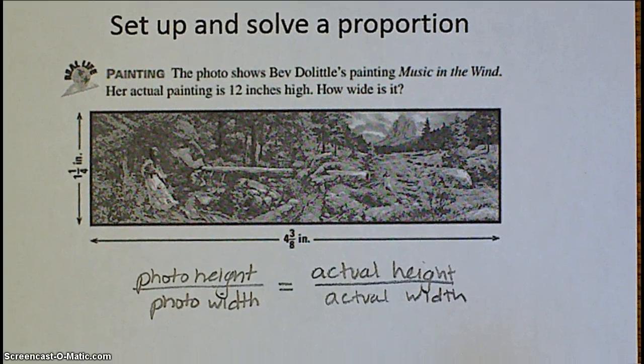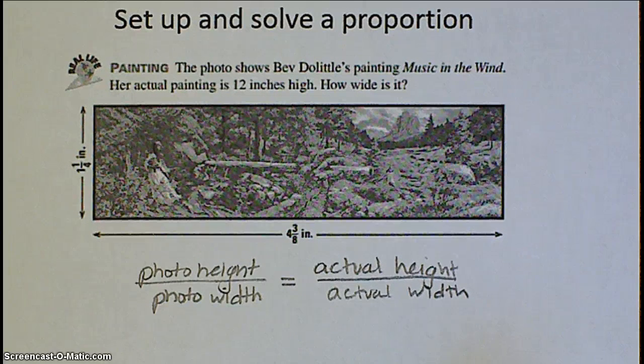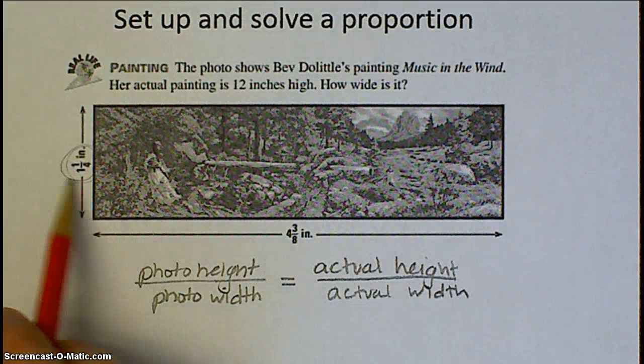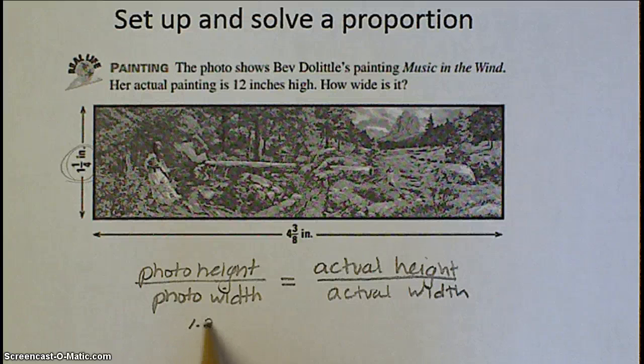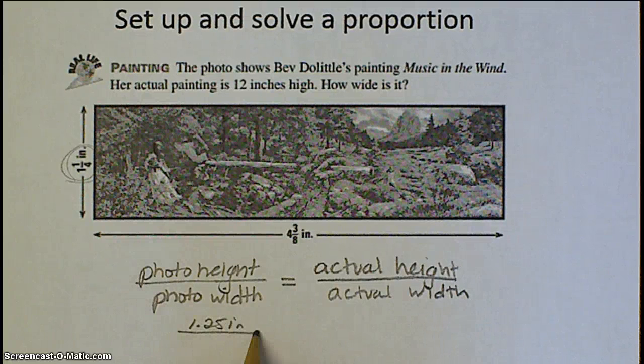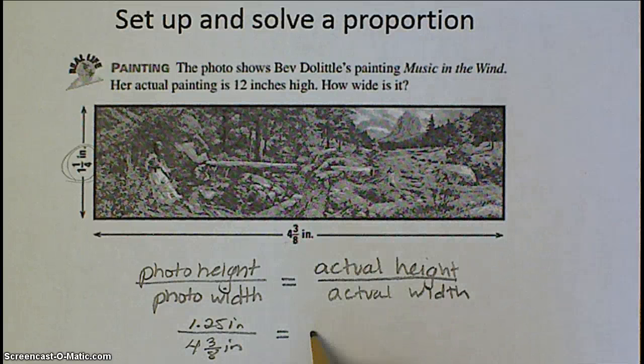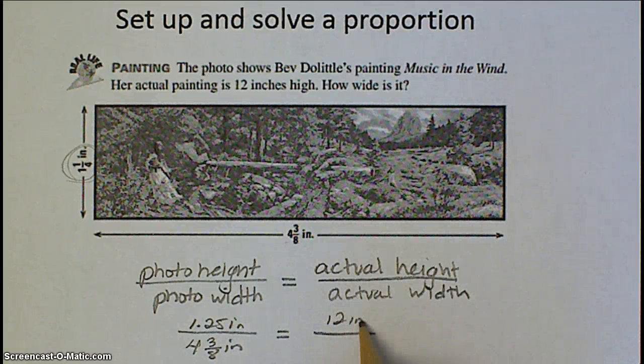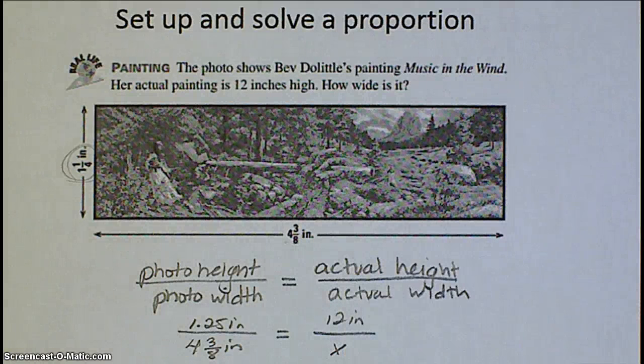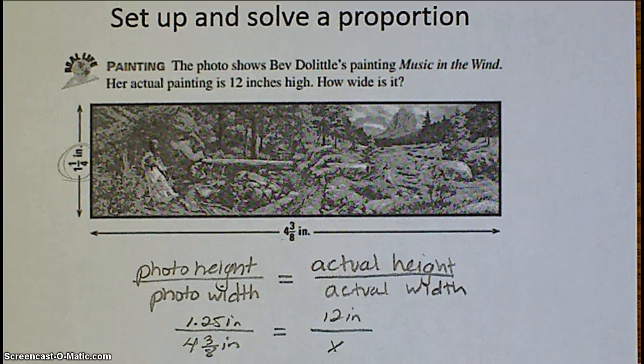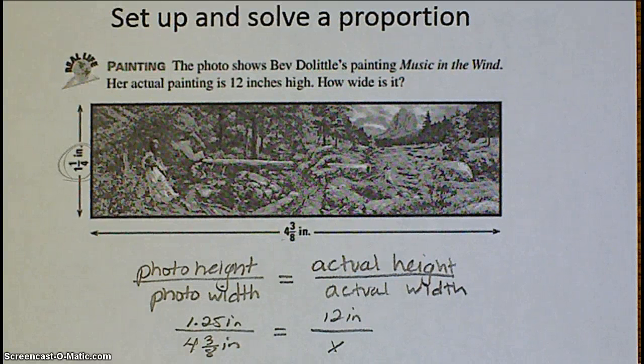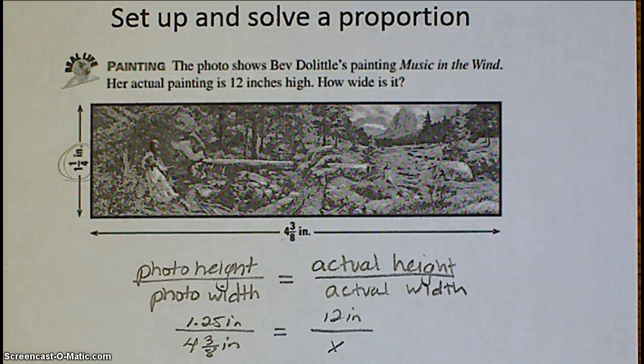And now you can just plug in the numbers that are provided to you in the problem. So my photo height, that's right here, 1 1⁄4 or 1.25 inches. Photo width, 4 3⁄8. The actual height is 12 inches. The actual width, we don't know, so you just put an x. Now go ahead, pause the video, do your cross products like we did yesterday, and then resume the video to see if you got the answer correct.